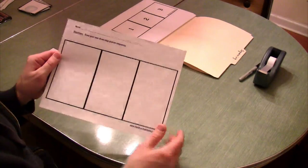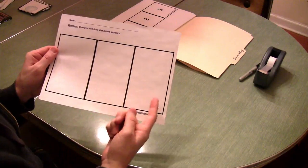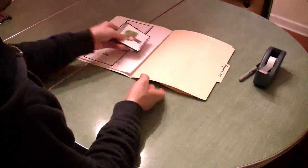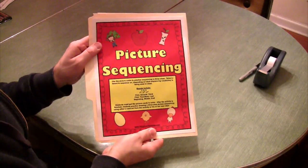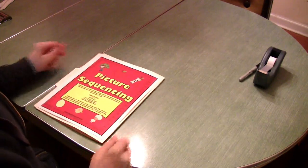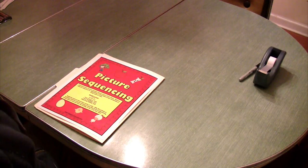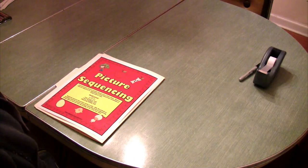And remember the worksheet where you can draw your own three-step picture sequence. This has been another reading activity from Have Fun Teaching. Be sure to check out HaveFunTeaching.com for more great reading activity centers for your classroom.